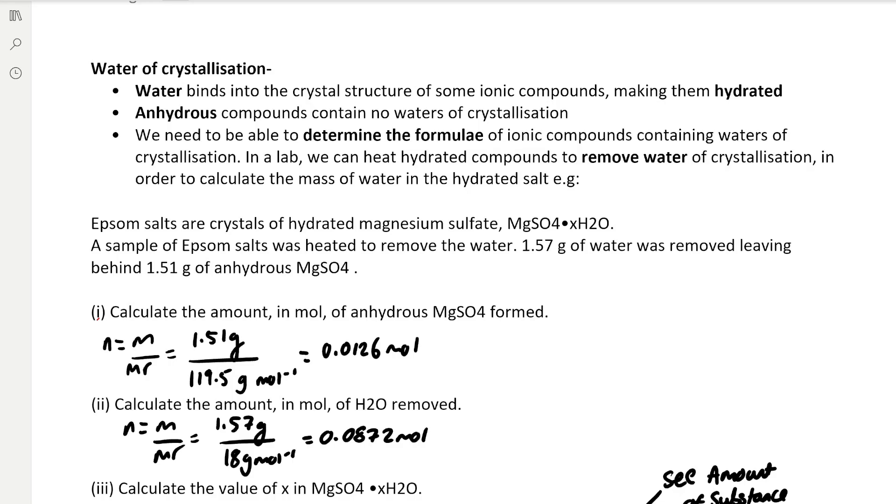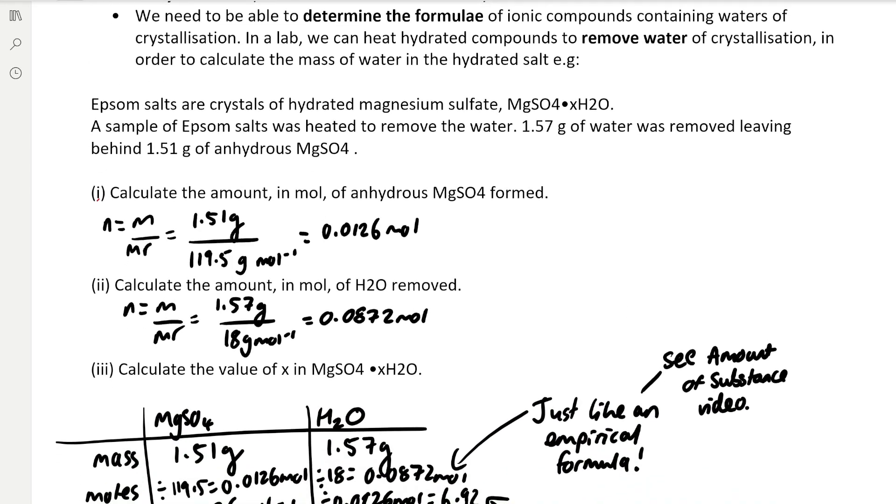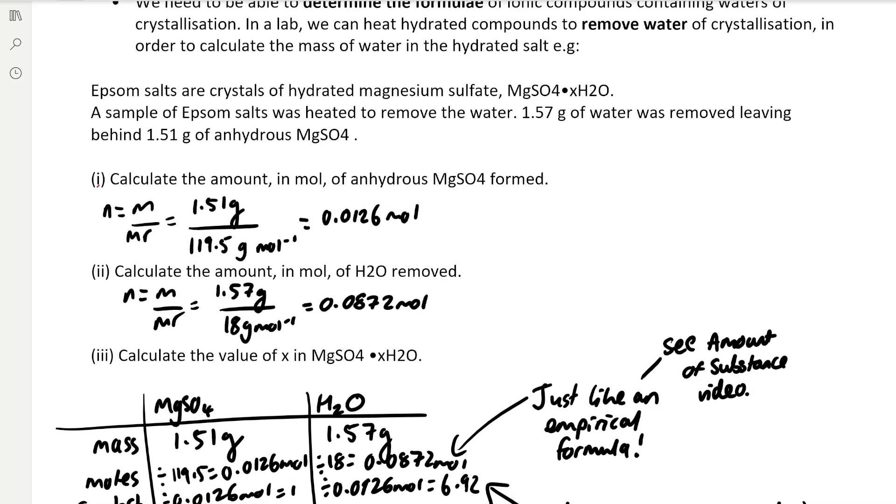We can use this data to help us calculate the formula of the hydrated salt. In part (i), we need to calculate the moles of anhydrous magnesium sulphate. We use moles equals mass over MR formula, and that gives us 0.0126 moles.